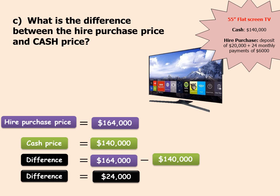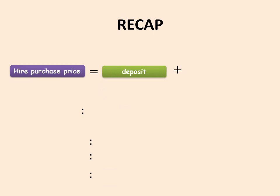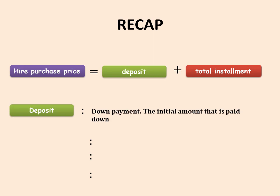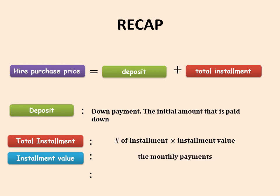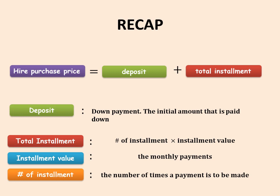Let's do a quick revision. To calculate the hire purchase price, we take our deposit and add it to our total installment. The deposit is the down payment. The total installment means we multiply the number of installments by the installment value. The installment value is the monthly payment you're going to make. That brings us to the end of another lesson. Continue to watch, like, subscribe, and comment below if anything is still unclear.